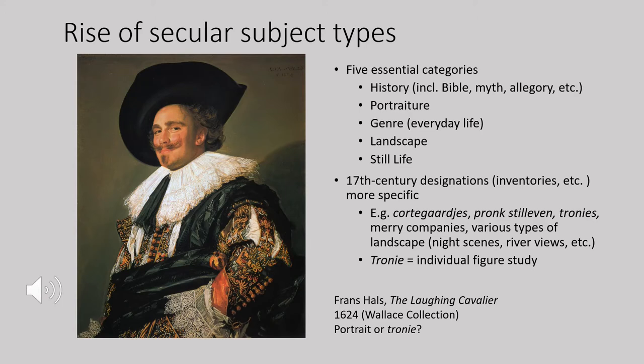17th century Dutch inventories break down subject categories into very specific types — from merry companies depicting people enjoying themselves in a tavern, to still lives gathering luxury goods from around the world. Contemporary historians divide these into five basic categories: history painting, portraiture, scenes of everyday life, landscape, and still life. For example, Frans Hals's so-called Laughing Cavalier might be a portrait requiring a commission, or it could be a tronie — a generic figure study with a highly desirable model — a novel subject type that became very popular in the 17th century.